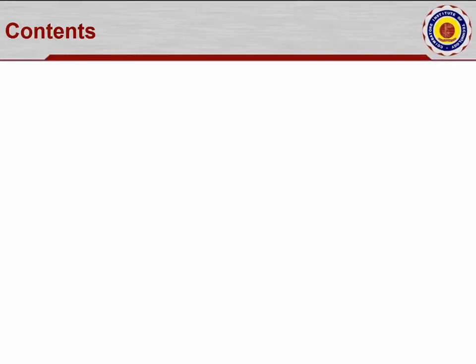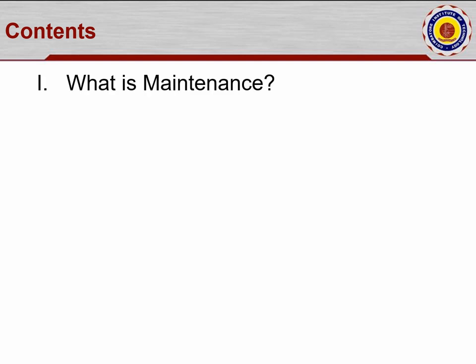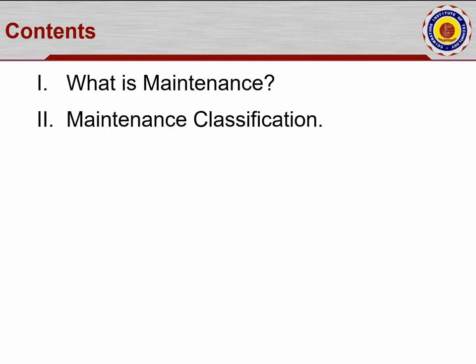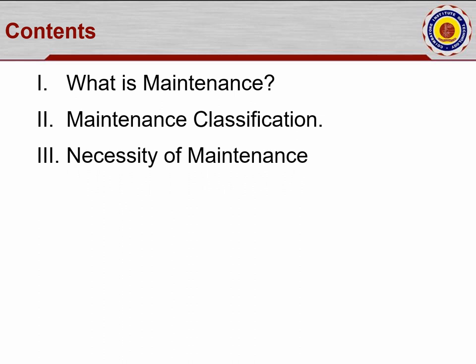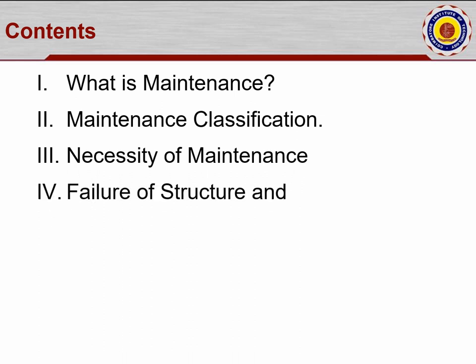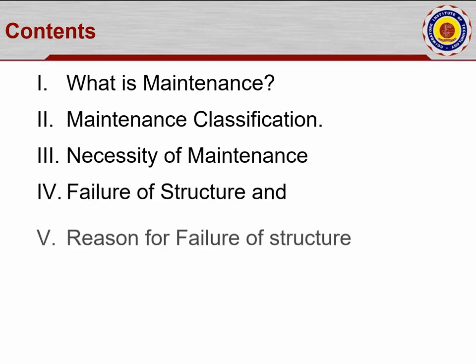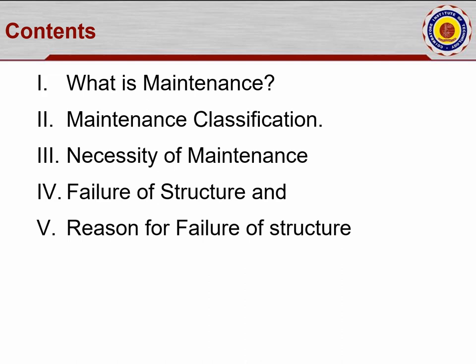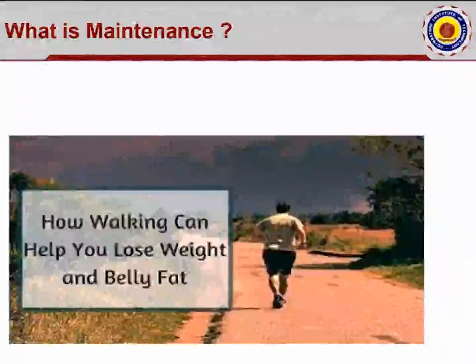In this chapter, the following topics are going to be discussed: number one, what is maintenance; number two, maintenance classification; number three, necessity of maintenance; number four, failure of structure; and number five, reasons for failure of structure.